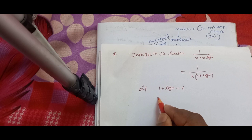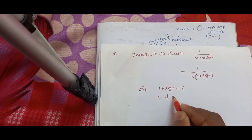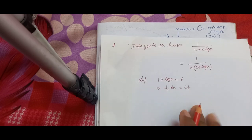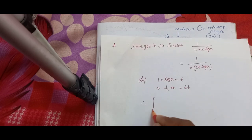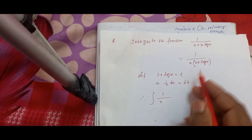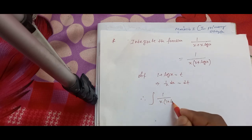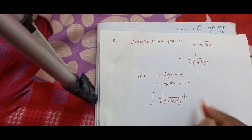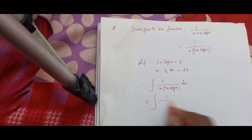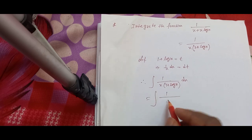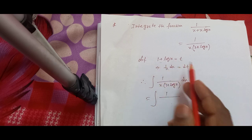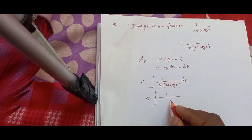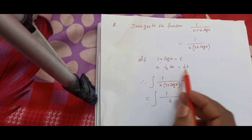Therefore, (1/x)dx is equal to dt. The integration of 1/x times (1 + log x) dx is equal to the integration of 1/(1 + log x) dx/x, where 1 + log x equals t and dx/x equals dt.